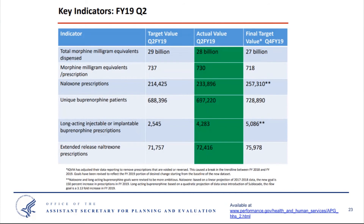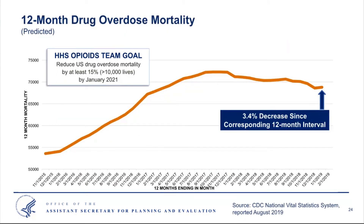We are encouraged by the provisional drug overdose data, which have shown a declining trend in overdose deaths. We've seen a 3.4% decrease corresponding to the 12-month interval beginning in January 2018 and ending in January 2019. We have a goal internal to HHS to reduce drug overdose mortality by at least 15% by January 2021. The declining trend is very encouraging, but we recognize that we certainly have a long way to go in curbing the opioid crisis.